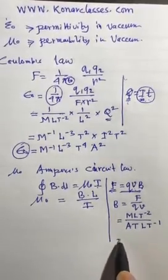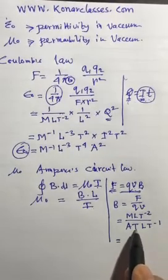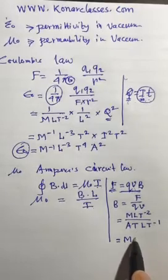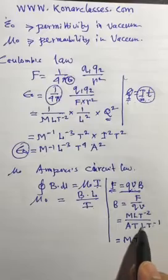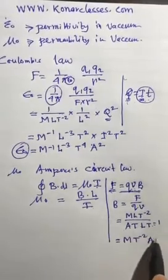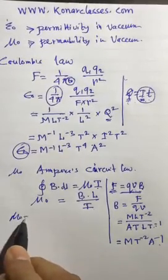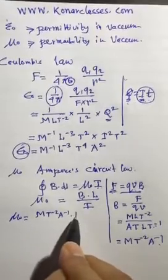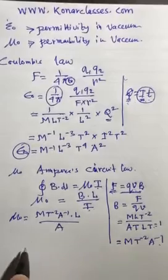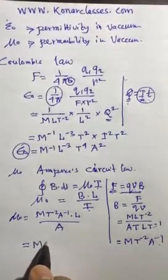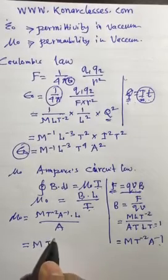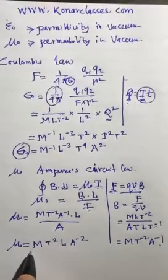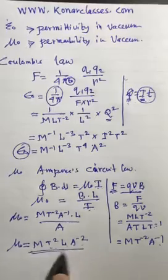So deriving the dimension of B: the L's cancel out and the T's partially cancel, giving M T to the power minus 2 times A to the power minus 1. So the dimension of B is M T to the power minus 2 A to the power minus 1. Then mu naught equals B into L by i, giving M T to the power minus 2, L, A to the power minus 2. So the dimension of mu naught is M L T to the power minus 2, A to the power minus 2.